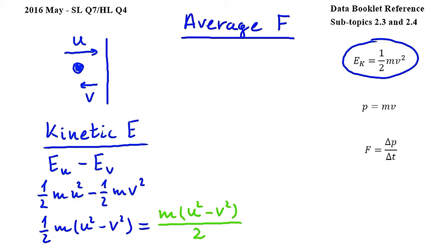Next, let's work with the average force. We will start by using this equation from subtopic 2.4, where F is force, delta P is change in momentum, and delta T is change in time. So then we can write F is equal to, and using this equation also from subtopic 2.4, I will replace delta P by M times delta V. So I get M times delta V over delta T.